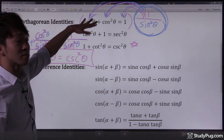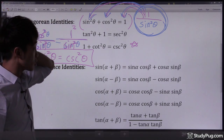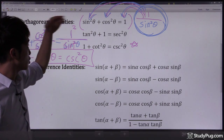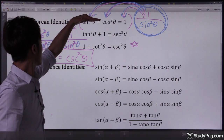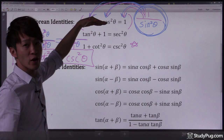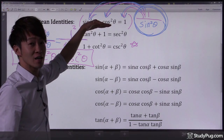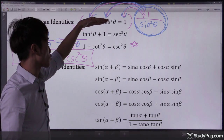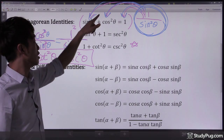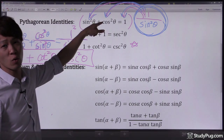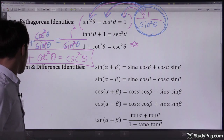We used the unit circle to prove the first Pythagorean identity, and from that it's very easy to derive the other two Pythagorean identities from the first one.